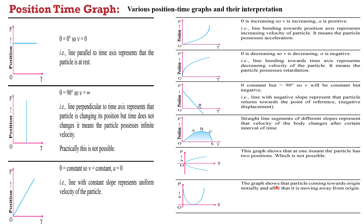This graph shows the particle coming towards the origin initially and after that moving away from the origin. This is the position-time graph.